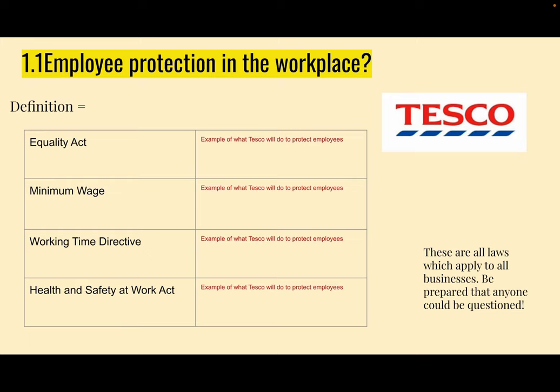Come up with an example for Tesco's for each piece of legislation. For example, if we take the Equality Act, read through it and give an example of what Tesco's will do to protect their employees in relation to that Act. Then do the same for minimum wage, working time directive, and health and safety — just think of little examples of what they would put in place. Remember, because these are legal implications, by law they have to follow them. They have to be paying at least the minimum wage and following the working time directive, otherwise they are breaking the law.